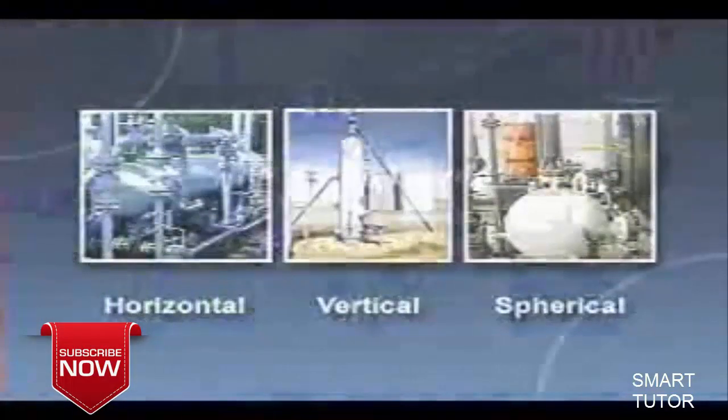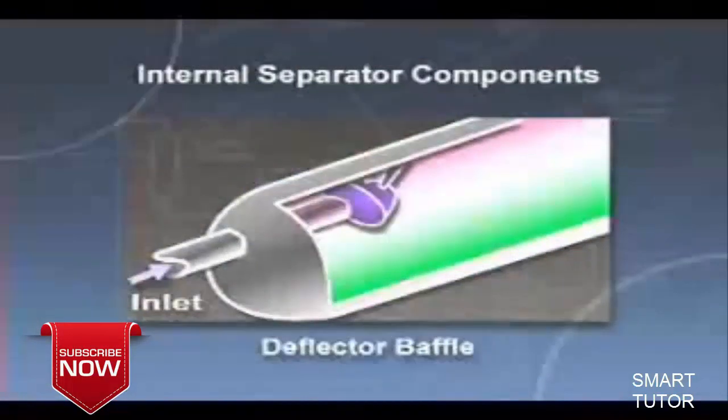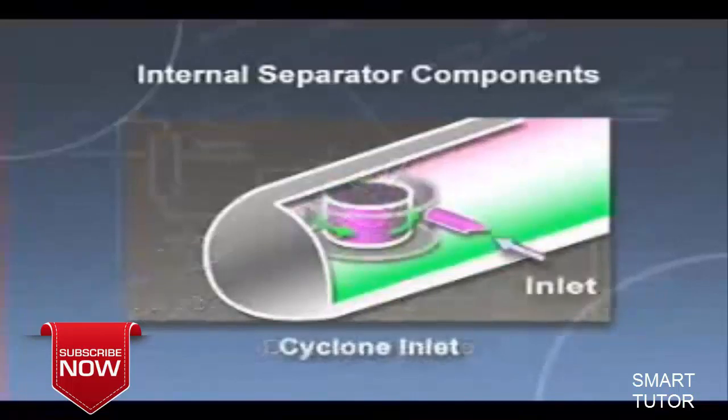All separator types have in common certain internal vessel components. Inlet diverters provide the initial gross separation by changing the flow direction as fluid enters the vessel. The deflector baffle, shown here, is one type of commonly used inlet diverter. Another is the cyclone inlet.